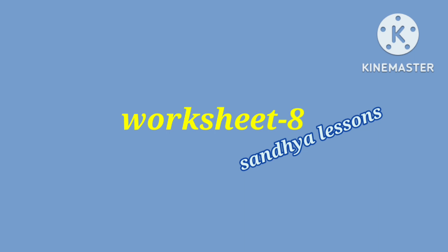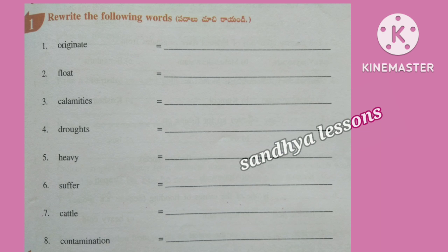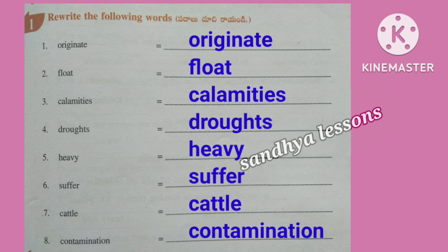Worksheet 8. First, rewrite the following words: Originate, Float, Calamities, Droughts, Heavy, Suffer, Cattle, Contamination.